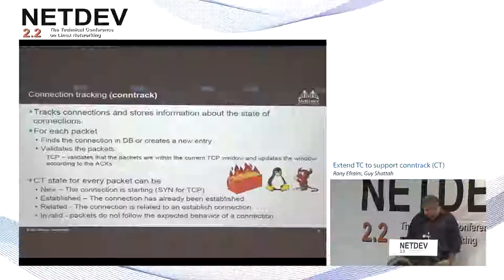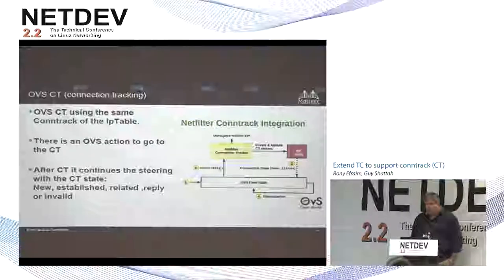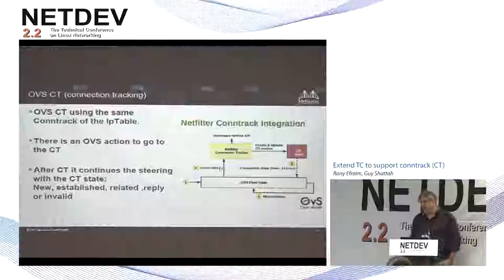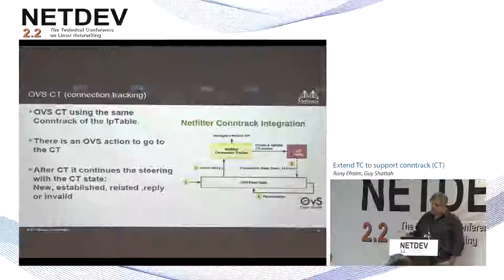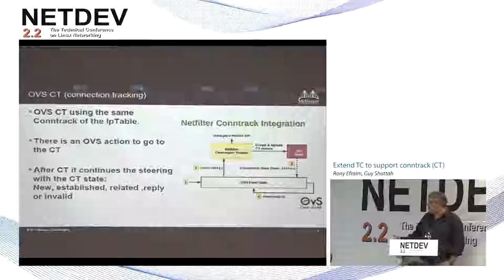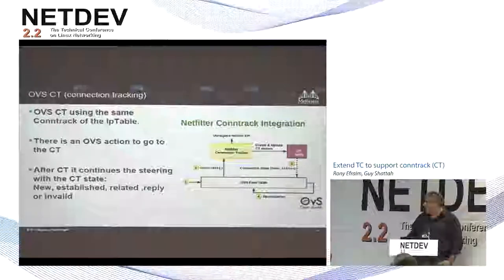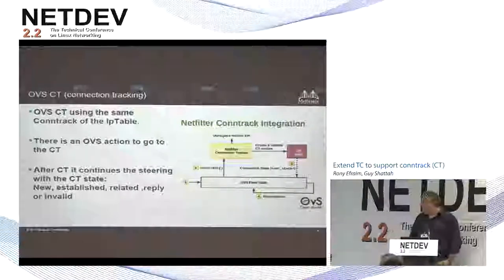This connection tracking is implemented today in conntrack and is currently used by iptables. Another customer using the same code is OVS. OVS uses the same conntrack code — nobody thought about duplicating the code. OVS has two rules: one is an action to go to connection tracking, and after the packet comes back from connection tracking, we can add rules to classify according to the state — new, established, related, or invalid.